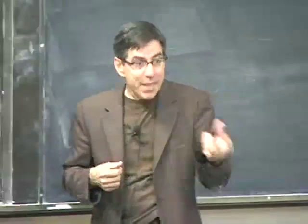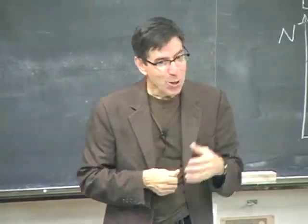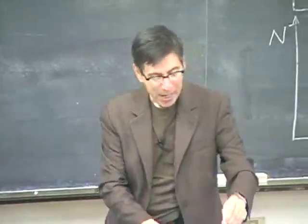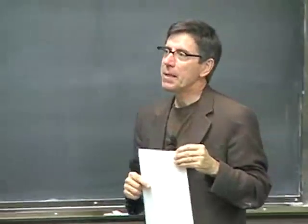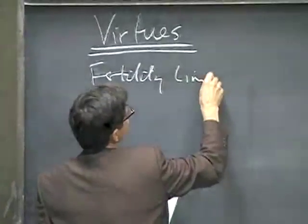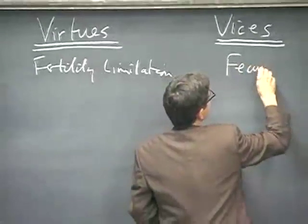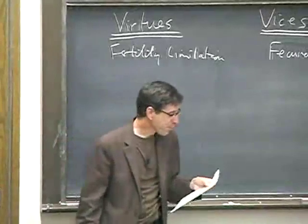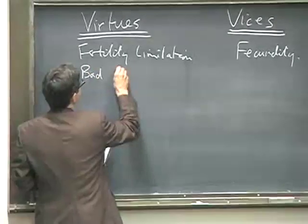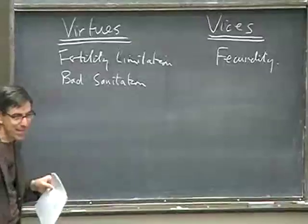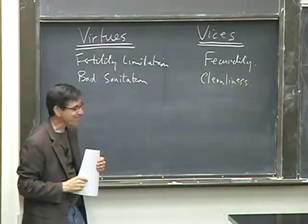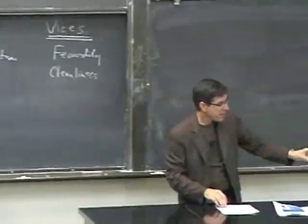In terms of the actual model, the last thing I want to discuss is what this implies about political economy before 1800 — what policies could governments take that would increase or reduce the welfare of their citizens. Some of those things turn out to be exactly what we'd expect. Fertility limitation is a virtue and fecundity is a vice within this Malthusian world. But after that, a lot of things become counterintuitive. Bad sanitation is, in fact, good. And cleanliness is, in fact, bad.